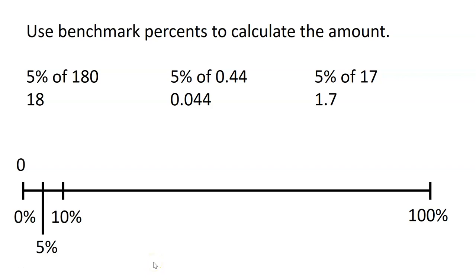Once you have 10%, to find 5%, we just divide by 2. Let me show you what this looks like on the double number line. So think about it. To get from 10% to 5%, we just take 10 and divide it by 2. 10 divided by 2 is 5.